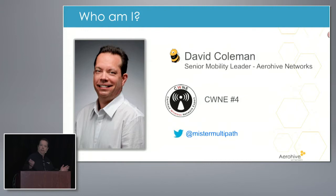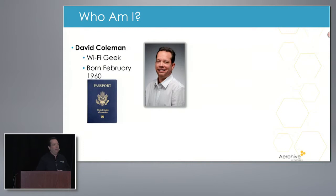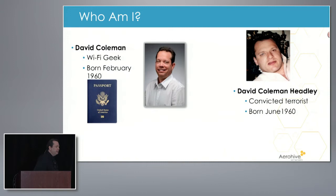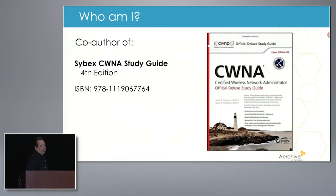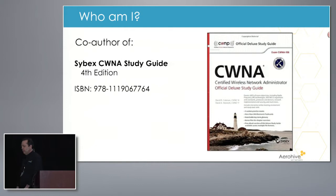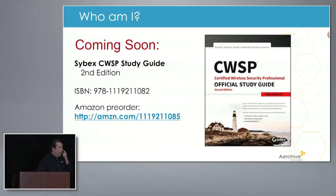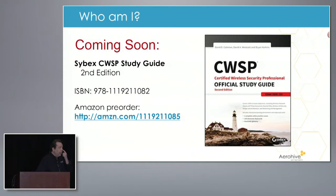I am CWNE number four. I hope I need more followers — one day I'll have as many as Keith. A lot of you know when I travel I usually get hassled because of my passport photo. That person is not me — he's a convicted terrorist, but I do get mistaken for him quite a bit coming back into the United States, so Homeland Security and I have a very intimate relationship. I'm the co-author of the CWNA study guide. We also have a CWSP study guide coming out as well. Enough of the shameless plugs — let's get into the troubleshooting.